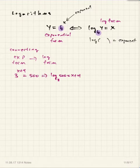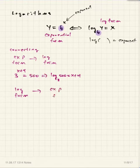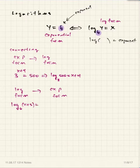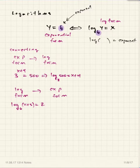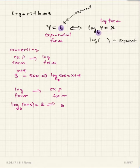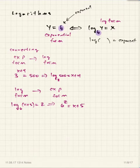Going from log form to exponential form - you have to be able to go both directions. For example, log base 6 of (x+5) equals z: the base on the exponential form is 6, and since the logarithm is equal to the exponent, z would be the exponent. So it would be 6 to the z equals x plus 5. That would be the corresponding exponential form. You've got to be able to go back and forth between logarithm form and exponential form.